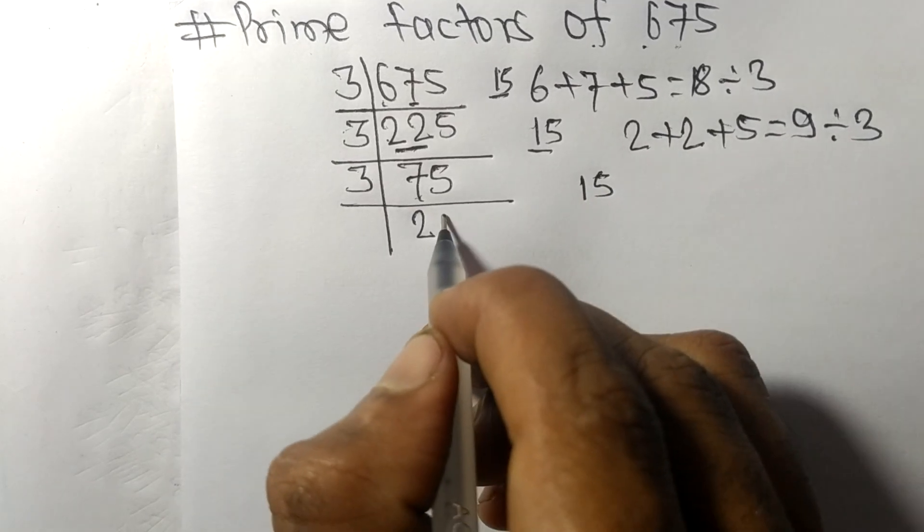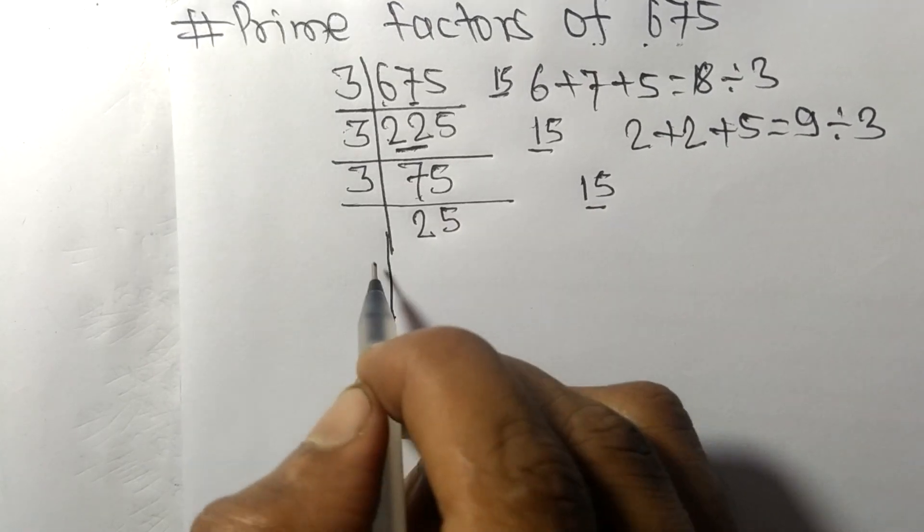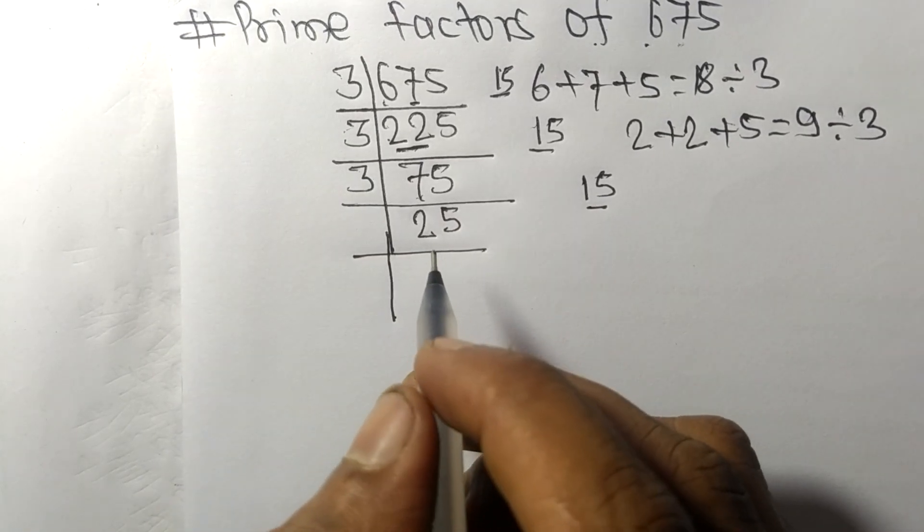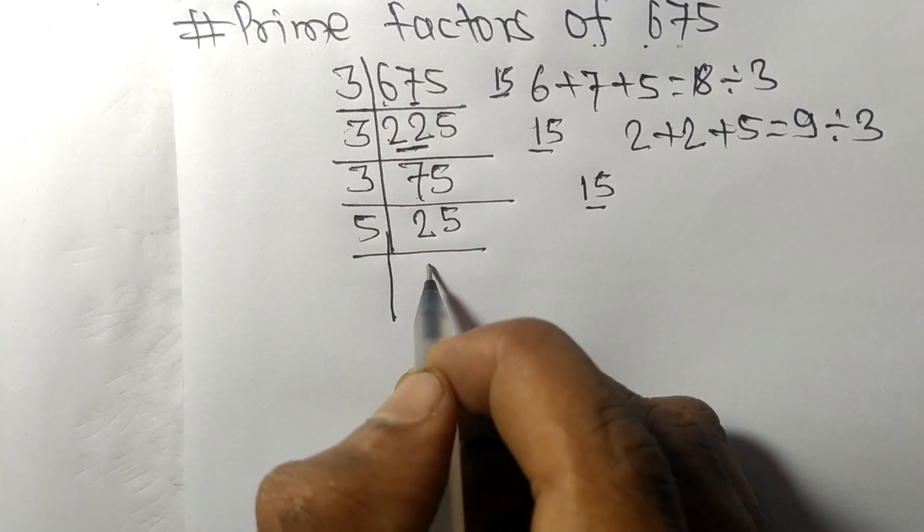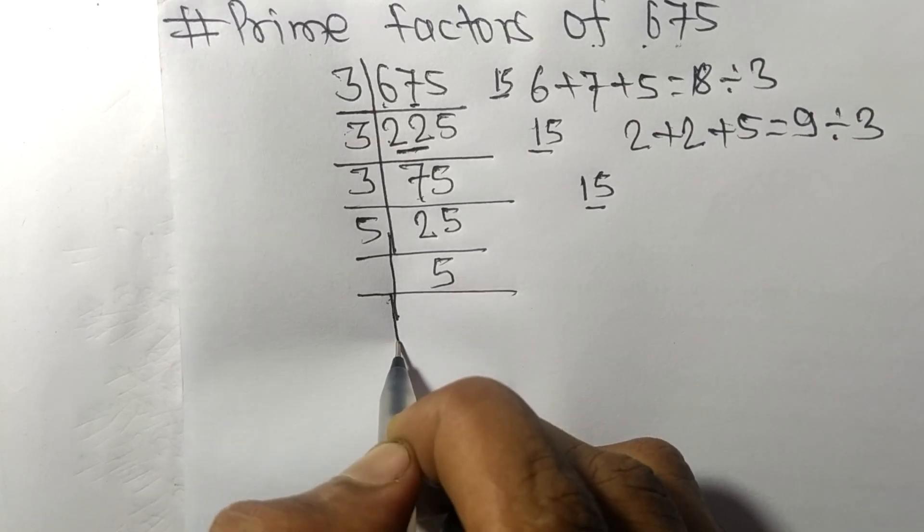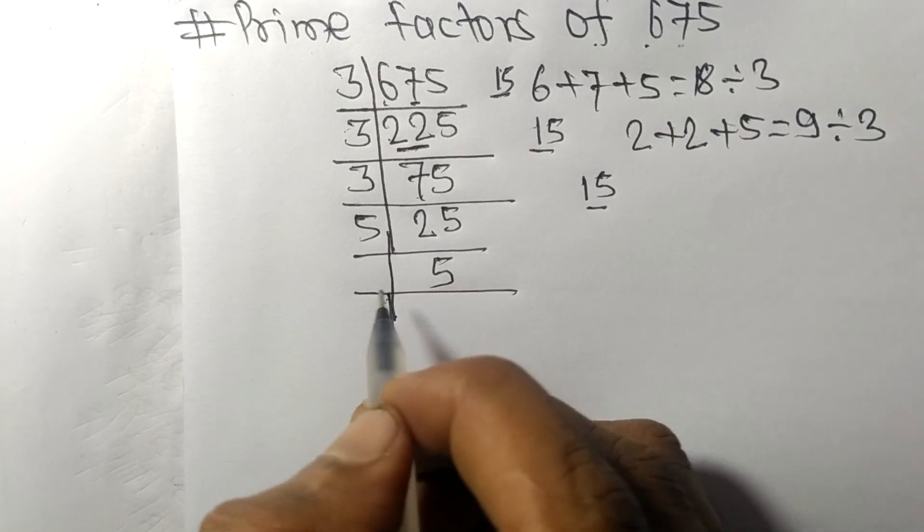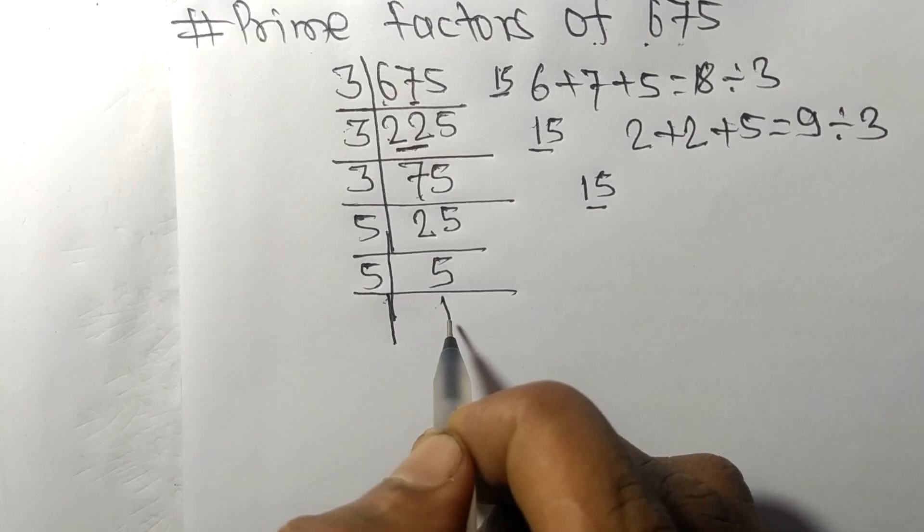Now we have 25, which is exactly divisible by 5, and we get 5. Now we have 5, which is exactly divisible by 5, and we get 1.